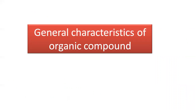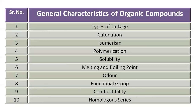Now we are going to discuss some general characteristics of organic compounds. By these properties, organic compounds are identified: types of linkage, catenation, isomerism, polymerization, solubility, melting and boiling point, odor, functional group, combustibility, and homologous series.